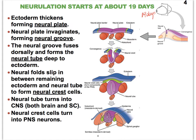Eventually, this neural groove is going to close off and form a neural tube. Keep in mind the three-dimensional shape of our embryo as this happens. As the neural tube seals itself off, the bright green neural crest cells — which are further differentiated ectodermal cells — slip in between the remaining ectoderm and the neural tube. These neural crest cells are going to make a good portion of our peripheral nervous system. The neural tube, on the other hand, is going to turn into our brain and spinal cord.